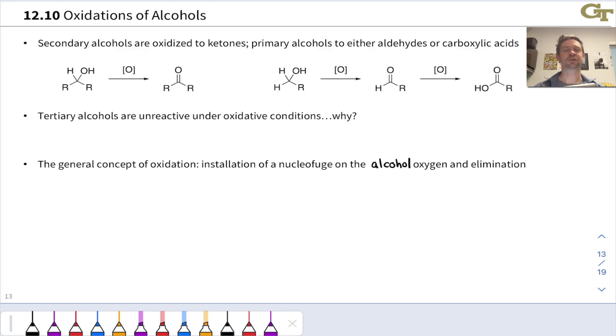So we have to transform the alcohol strategically, and specifically install a leaving group strategically in order to get this process to go mechanistically. We'll dig into chromic acid oxidations, which are the strongest oxidation conditions, and take primary alcohols all the way up to carboxylic acids.